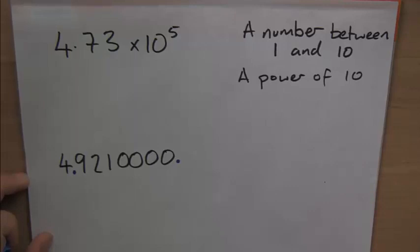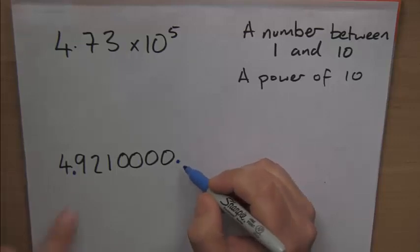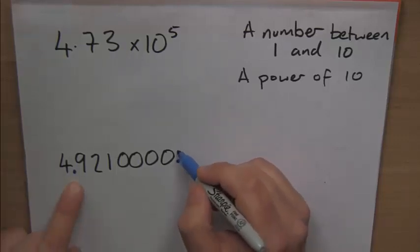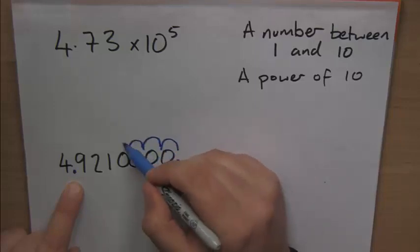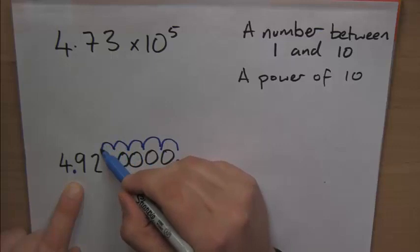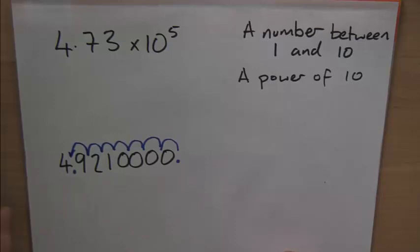Now, the question we need to ask ourselves is how many decimal places, how many places has this moved to get from there to between the 4 and 9? So it's gone 1, 2, 3, 4, 5, 6, 7 places to get from there to there.